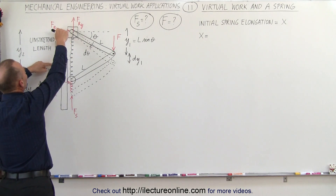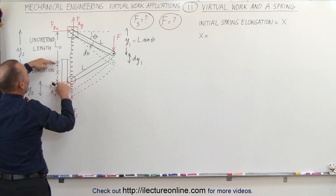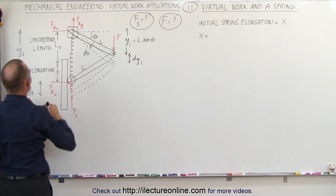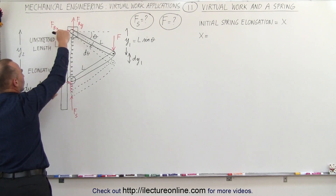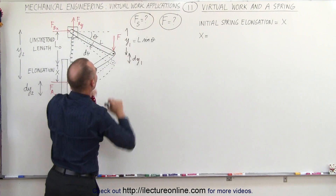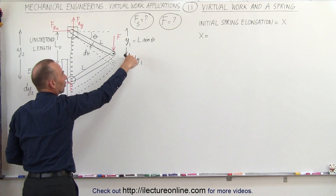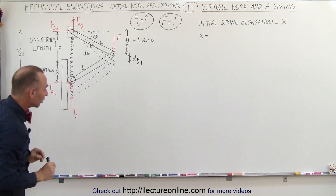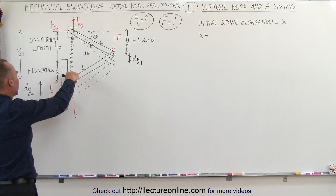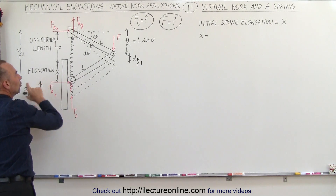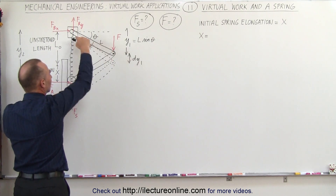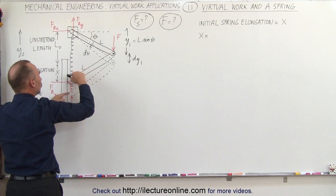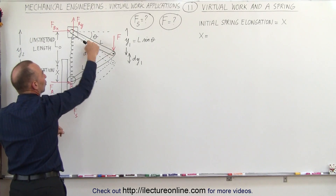The unstretched length of the spring is L sub-naught. Before we do virtual work, the spring has already been elongated by distance x. The total distance y2 is from the fixed end to the spring attachment, and y1 is half of that. When we apply a virtual displacement, we get a small increase dy1. Due to symmetry, dy2 should be twice dy1, because y2 is related to two beams moving while y1 is related to just one beam.